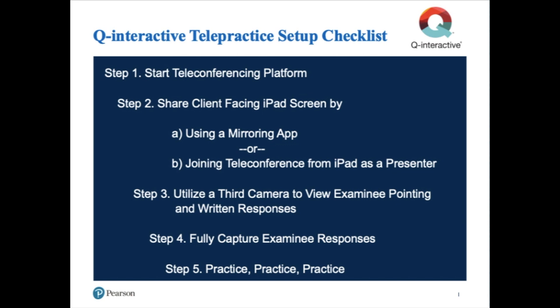Step 3 would be to utilize a third camera at the examinee's location to enable you to view the examinee's pointing and written responses. The examinee would join the meeting from their computer and also on a second web-enabled device that has camera functionality, such as a smartphone, an iPad, or a laptop, positioning this device to allow you to view the examinee indicate their responses. For detailed guidance related to the use of a third camera and or a facilitator, as well as additional technical information related to video, audio, and lighting quality, please visit our telepractice website and test-specific guidance documents on their respective product pages. On the telepractice website under the Newsroom tab, we have a deep dive video specifically on third camera setup ideas.